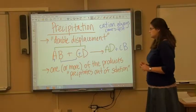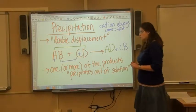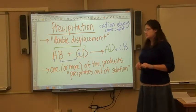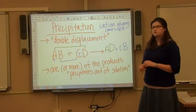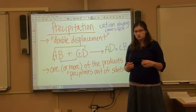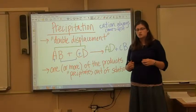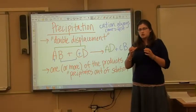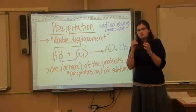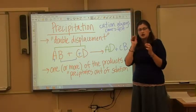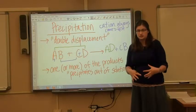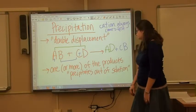In a precipitation reaction, one or more of the products is actually going to precipitate out of the solution. In other words, it's going to look like you have particles of solid falling out of your solution and collecting at the bottom.